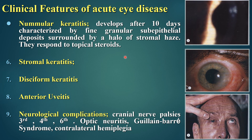Stromal keratitis presents as stromal edema, usually not initially associated with uveitis or keratic precipitates at the endothelial surface. When it does occur it becomes disciform keratitis, which is usually associated with anterior uveitis, though anterior uveitis can also occur without keratitis.